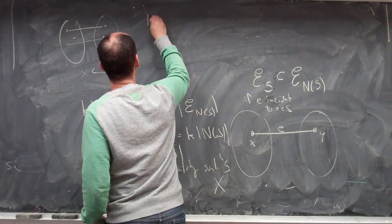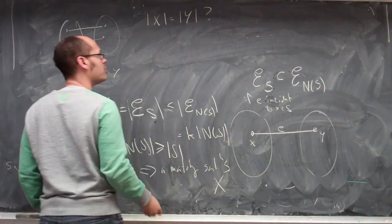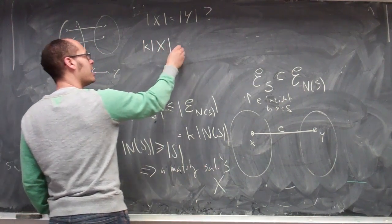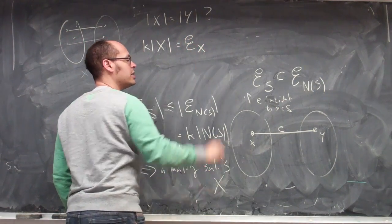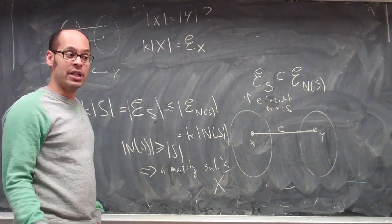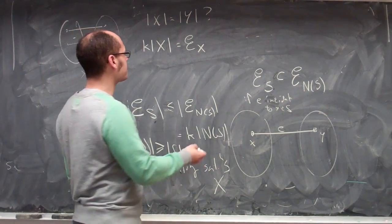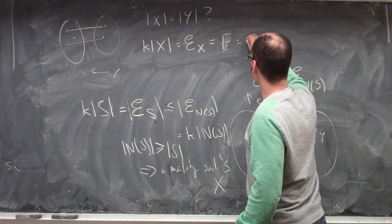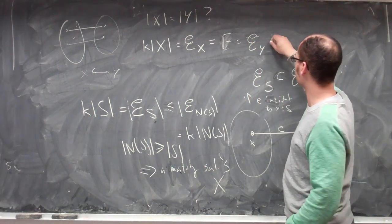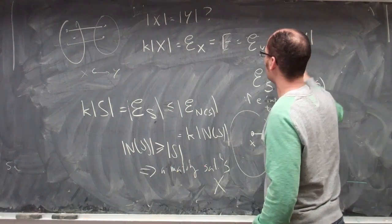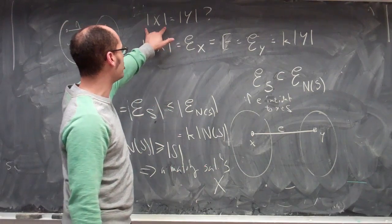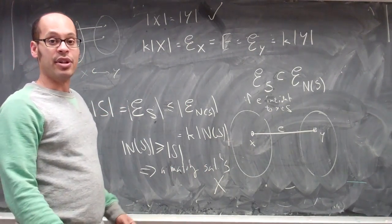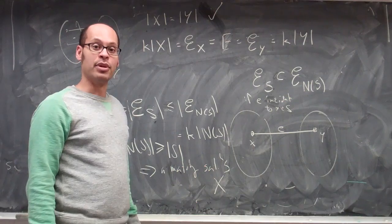So we just need to show that the number of things in x equals the number of things in y. Well, k times the number of things in x is exactly all the edges incident to some vertex in x. Since this is a bipartite graph, every edge has to touch x somewhere — so that's all the edges in the graph. But that also equals all the edges incident to some vertex in y, and therefore equals k times the number of things in y. Dividing by k gives us that x and y have the same size. Therefore this injective map is surjective, every vertex in y is saturated, and we have a perfect matching.